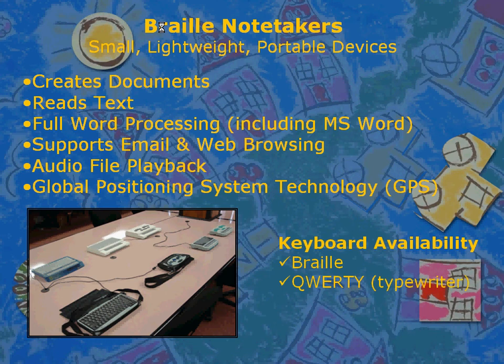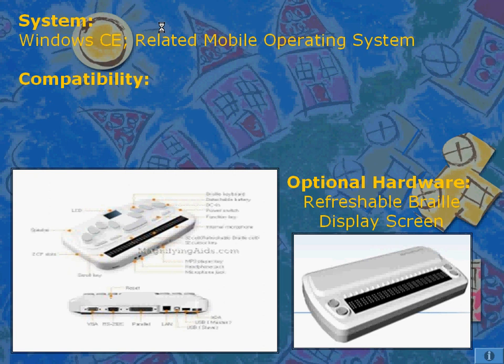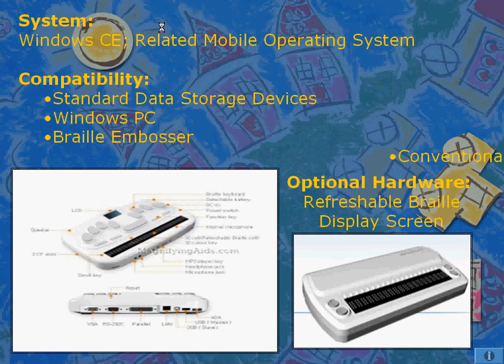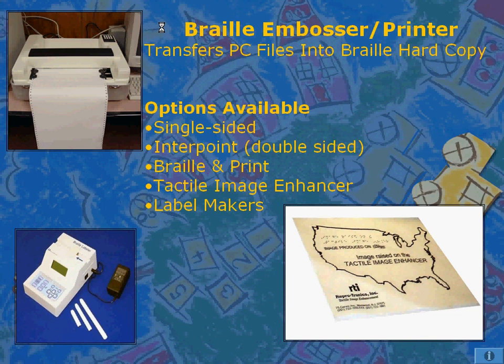The keyboard is available in braille or typewriter style and is compatible with Windows CE or related mobile operating systems, as well as standard data storage devices. The braille embosser transfers PC files into braille hard copy. Several options are available, including single-sided, interpoint, or double-sided braille, plus print tactile image enhancers and label makers.